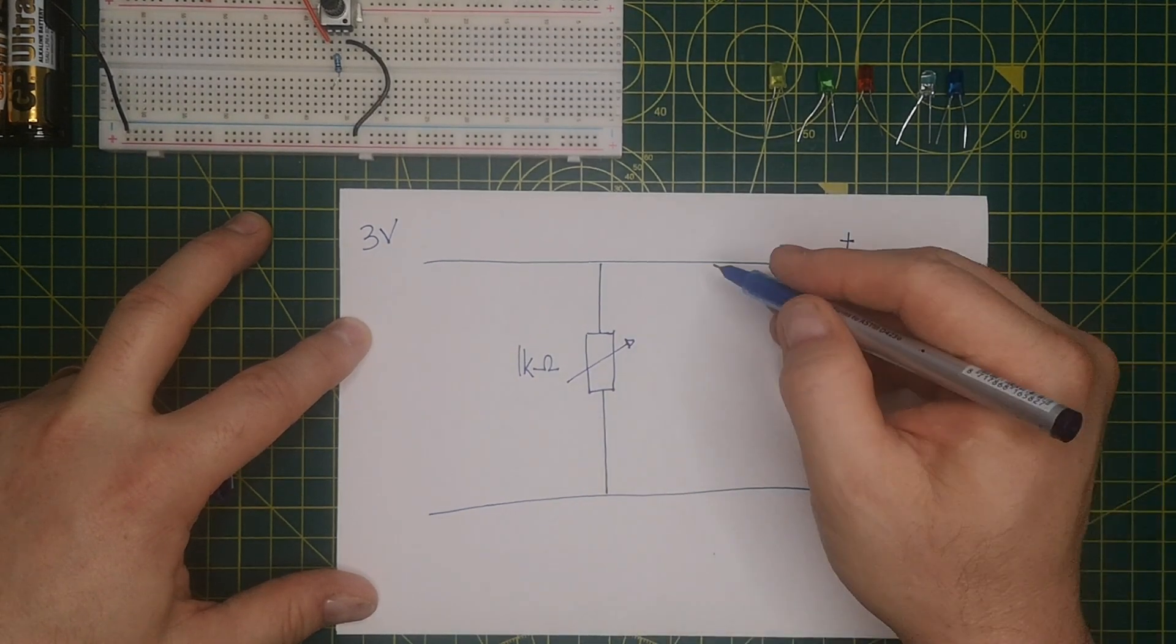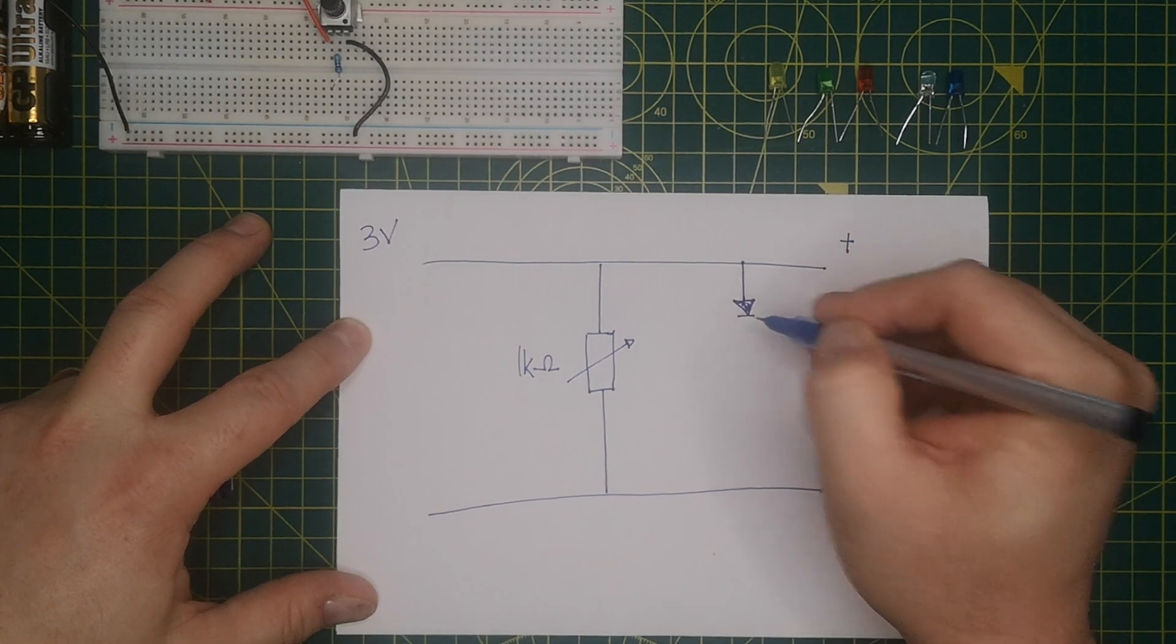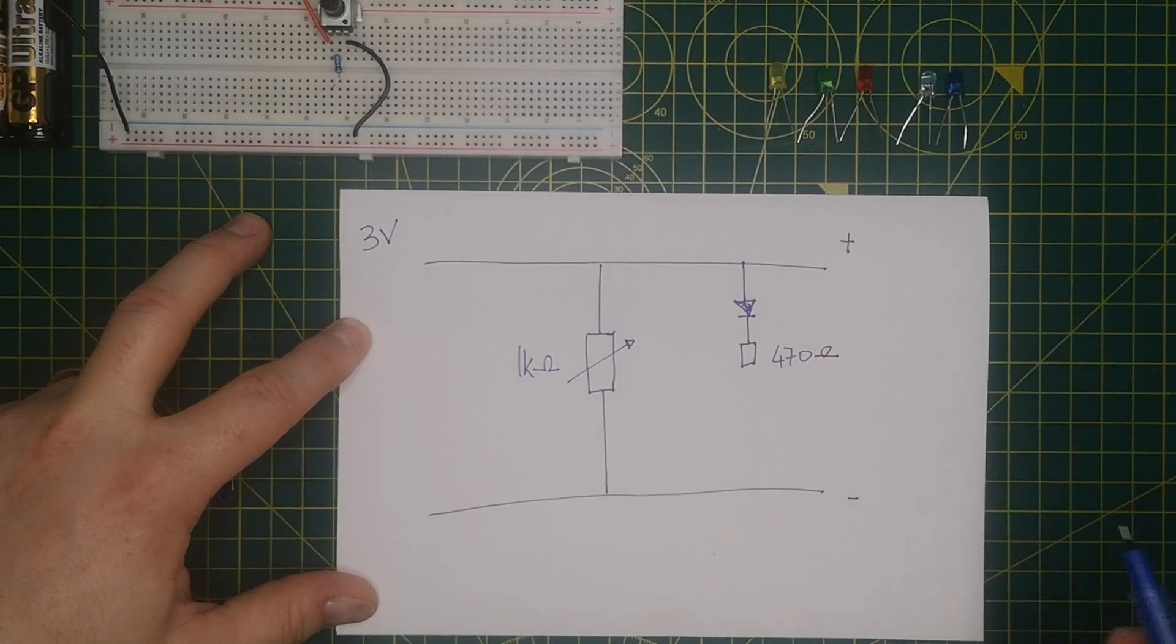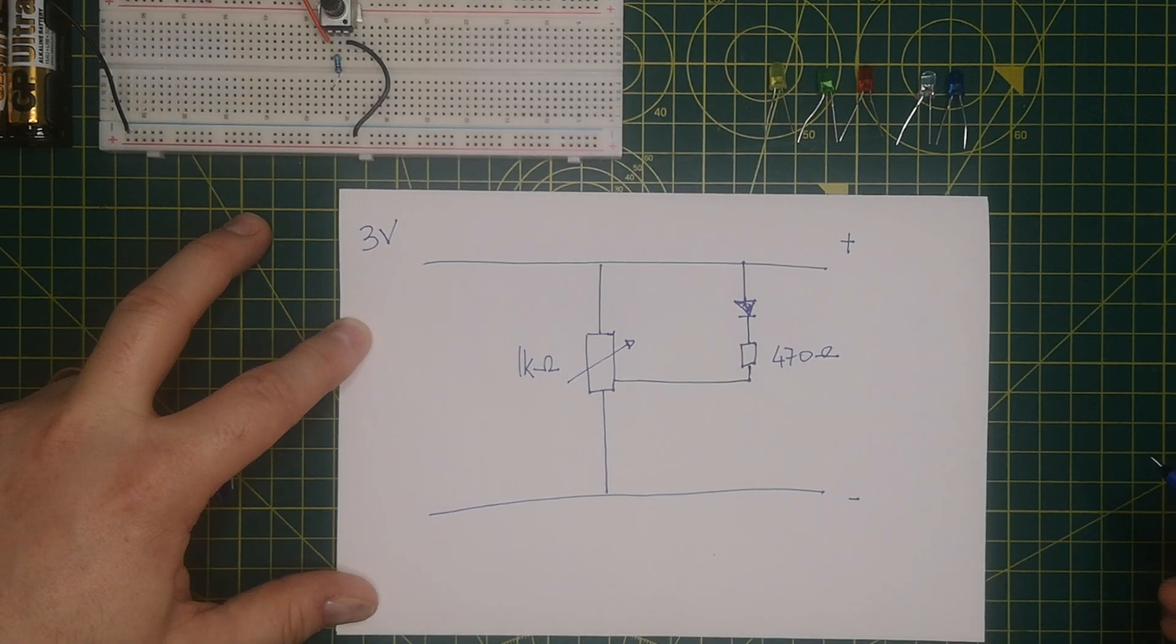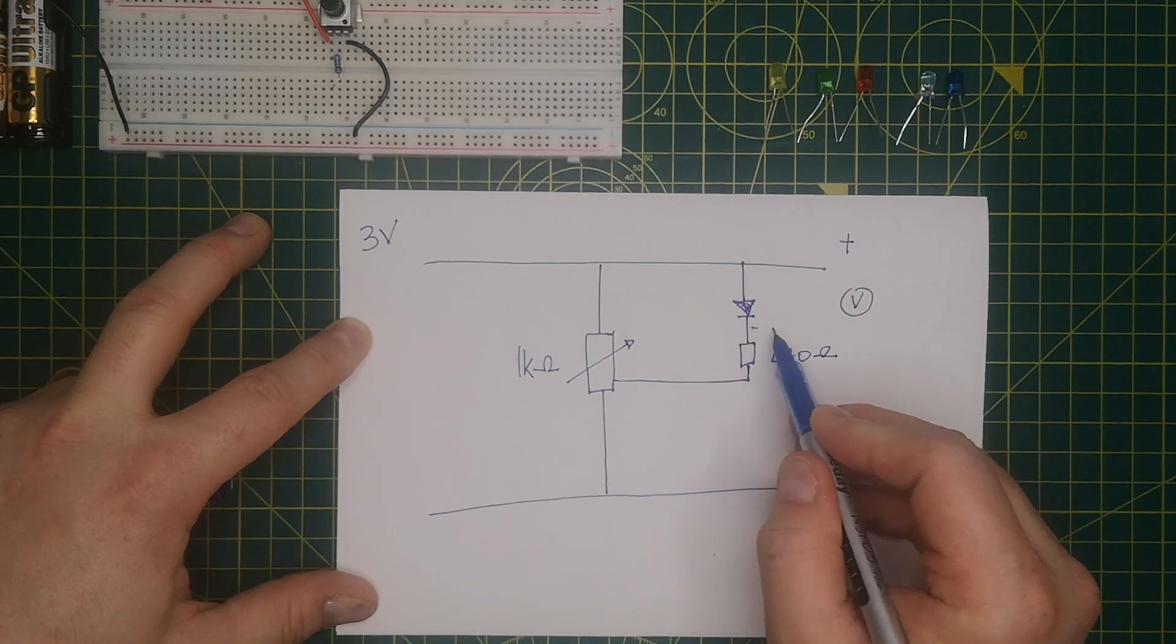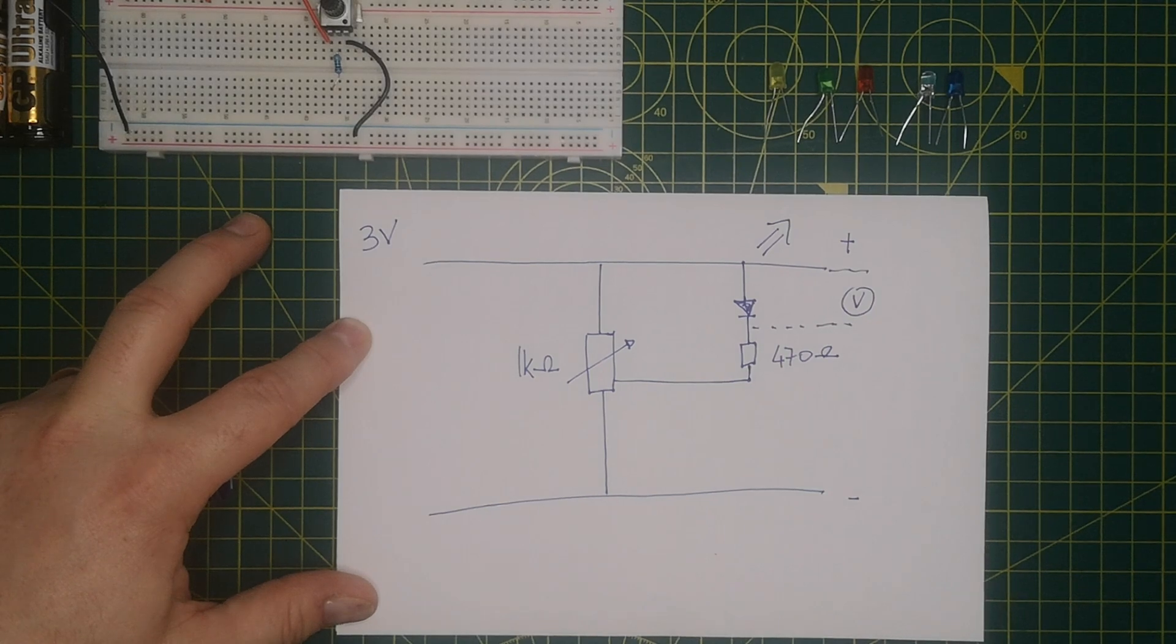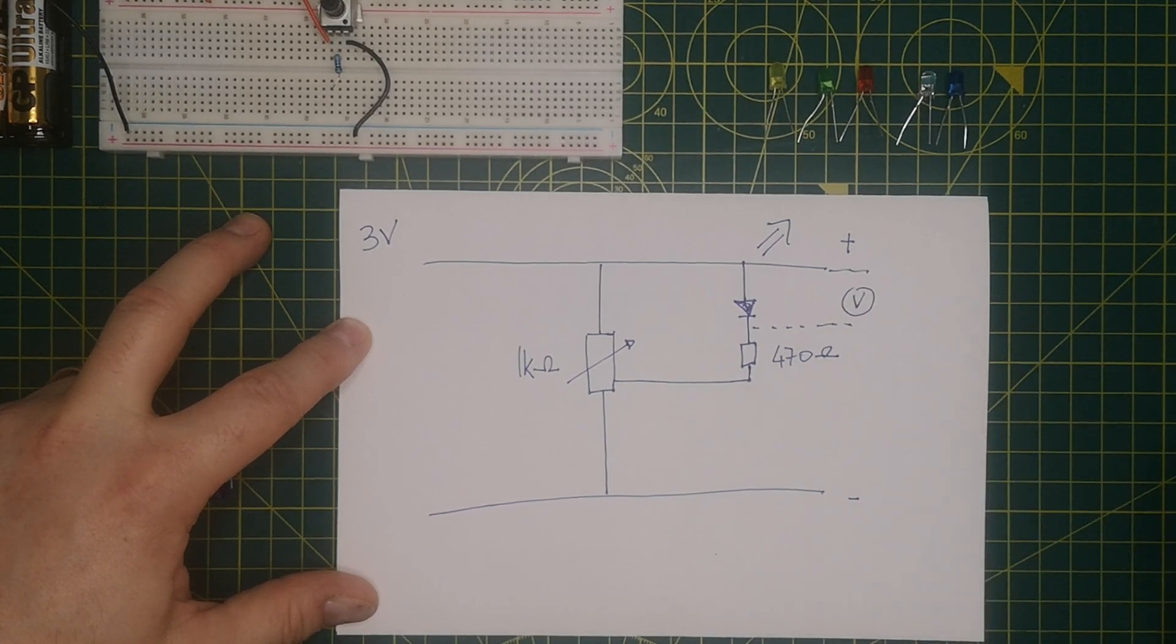And then also connected across there, we have, coming out of here, we have the LED, or we will have the LED when I wire it up, and then the LED in series with a, in this case, 470 ohm current limiting resistor, which is connected to the center tap of the potential divider. And what I'm going to do is I'm going to measure the voltage here across the LED, the voltage at which point the LED starts to give out light. Or the other way around, I suppose, start with the LED lit, and the voltage at which point the LED goes out.